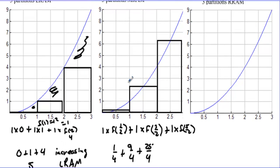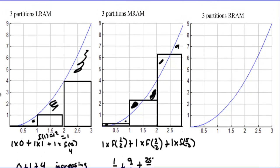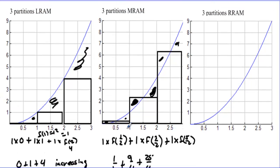This one is actually an overestimate — well, we're not really sure. We have some extra area and some missing area, so with MRAM it's hard to tell whether it's an over- or underestimate.